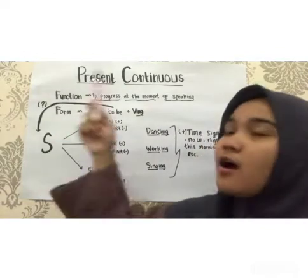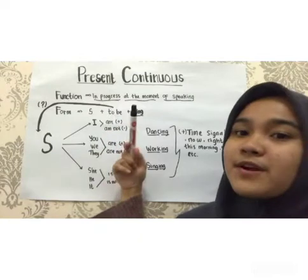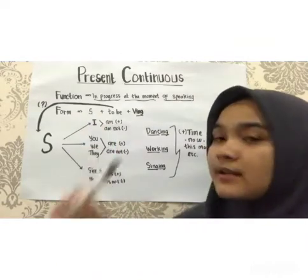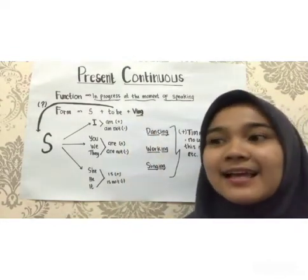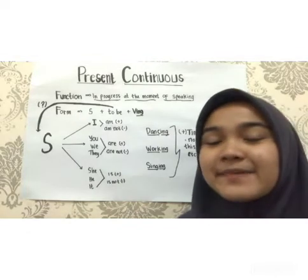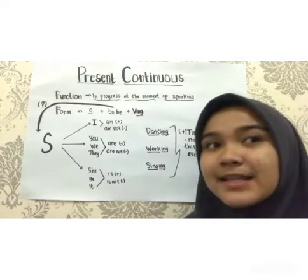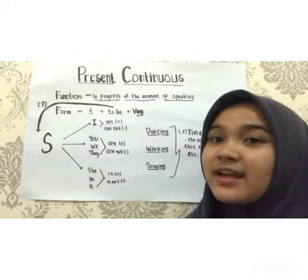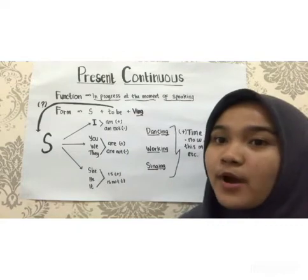So next, I will explain the formula of Present Continuous Tense: Subject + To Be + Verb-ing. To be is a helping verb that connects the subject with the verb. Verb-ing means the base verb with '-ing' added. For example: eat becomes eating, run becomes running, sleep becomes sleeping, work becomes working, dance becomes dancing. The point is we add '-ing' to the base verb.